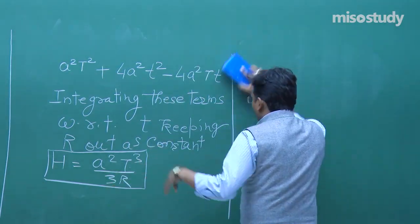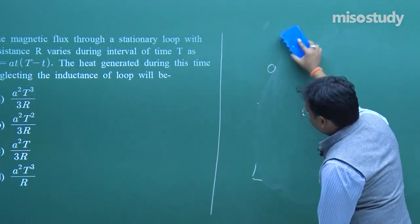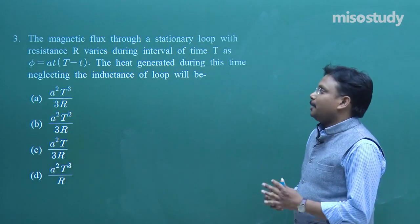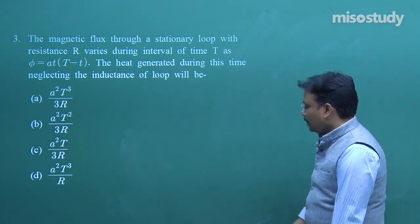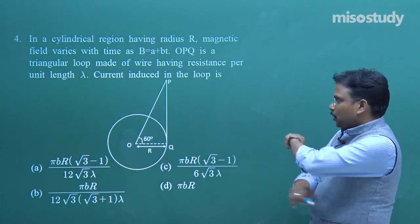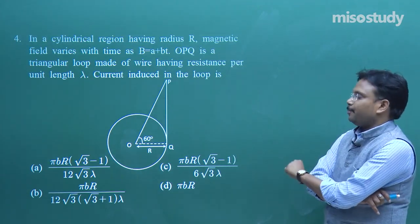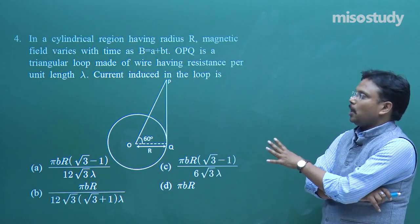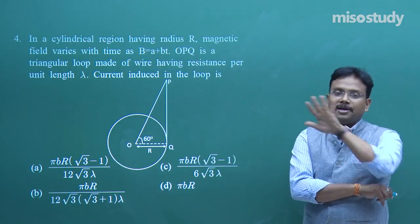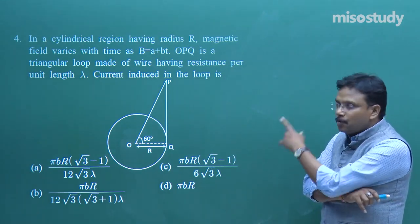Let's understand the problem. In a cylindrical region of radius R, the magnetic field varies with time as B = A + Bt (where A and B are constants). Triangle OPQ is a triangular loop made of wire having resistance per unit length λ. Find the induced current in the loop.